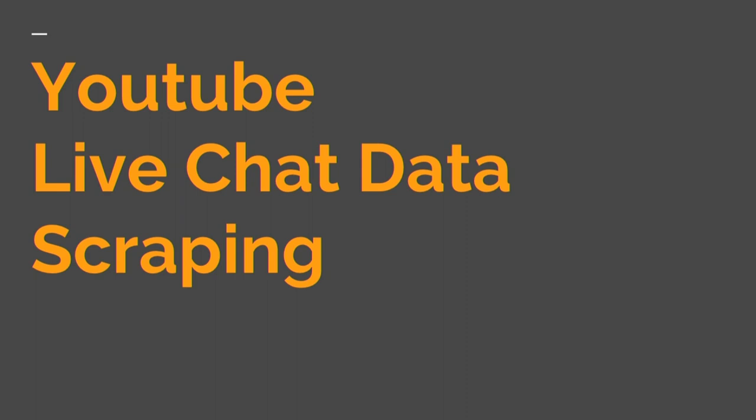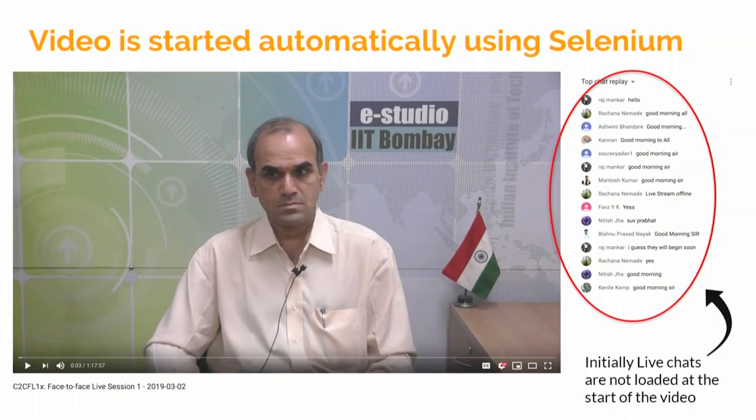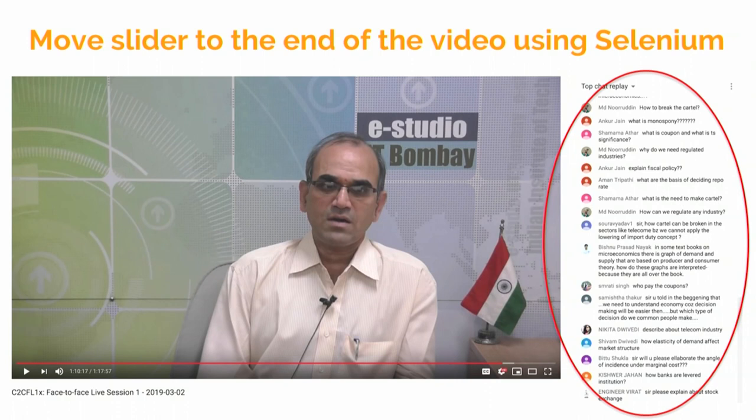In our project, the whole process from starting a video to scraping the relevant messages is fully automated. Running a Selenium script for around 10 videos takes about 20 minutes due to YouTube ads. When the video starts, the live chats are not yet loaded, so you have to go to the end of the video for chats to load. Then you switch from the main YouTube iframe to the sub-iframe for live chats, and use ID and class references to extract messages and author names.